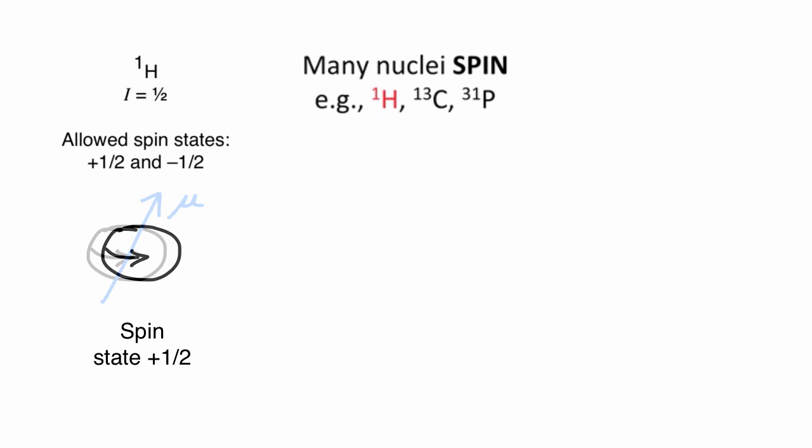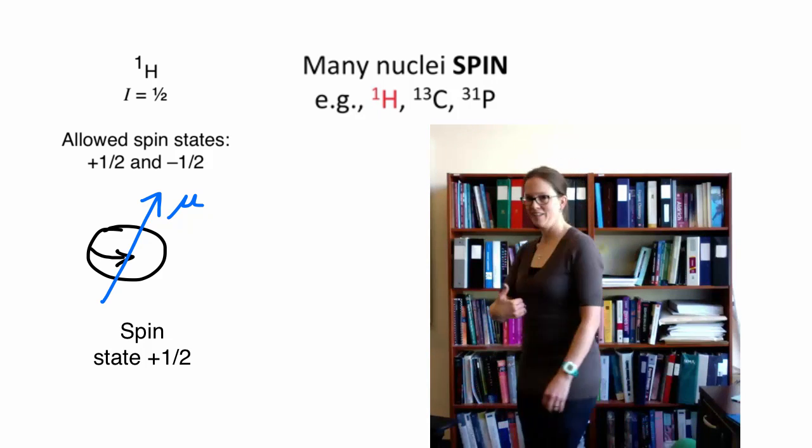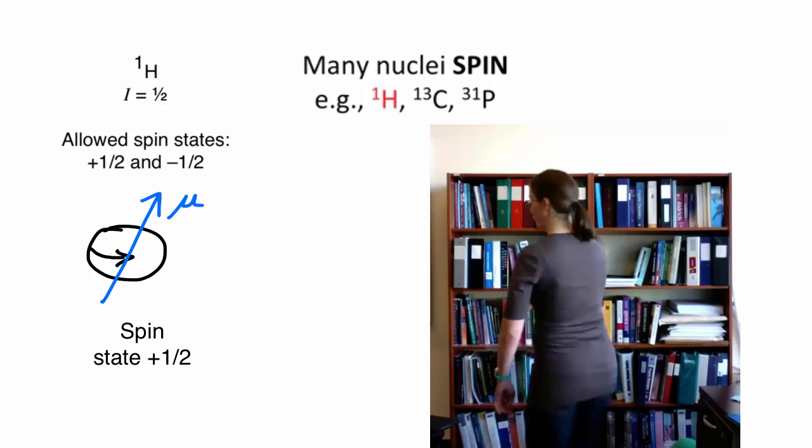Their spin creates a magnetic moment μ. If you can imagine that I'm the nucleus, I could have a spin in one direction, +1/2, or in the opposite direction, -1/2.